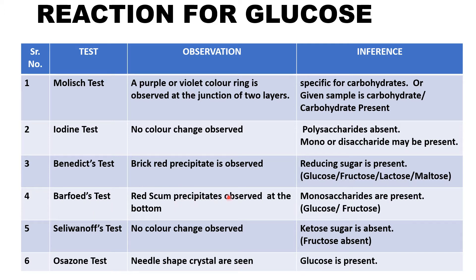Sucrose is not present because it is a non-reducing sugar. Then I will perform Barfoed's test, which will give a red scanty precipitate at the bottom. This test is done to differentiate between disaccharide and monosaccharide, so here we confirm the given sample is a monosaccharide.